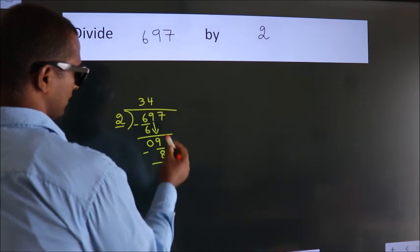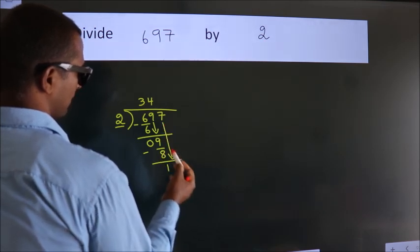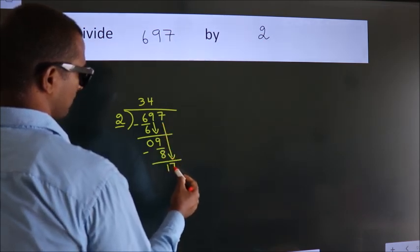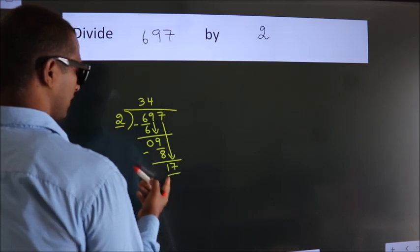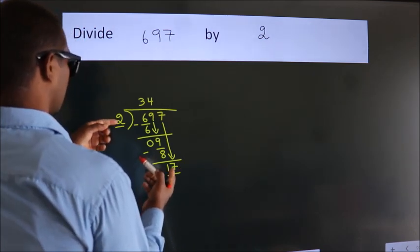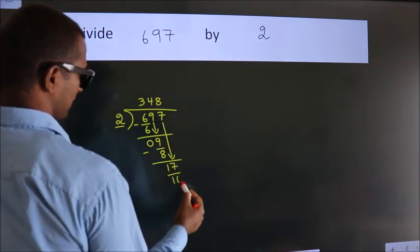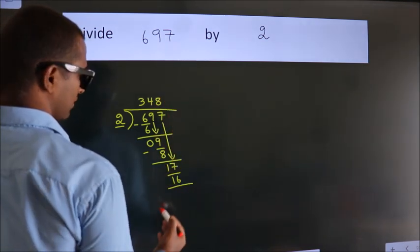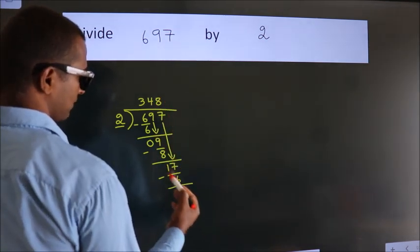After this, bring down the beside number. So, 7 down, making 17. A number close to 17 in the 2 table is 2 times 8, which is 16. Now we subtract. We get 1.